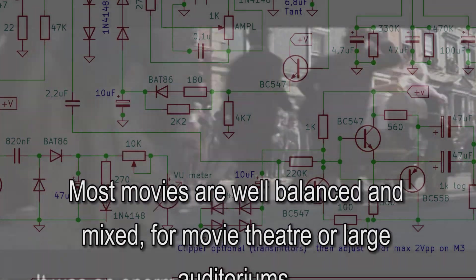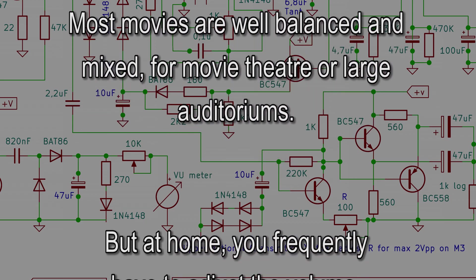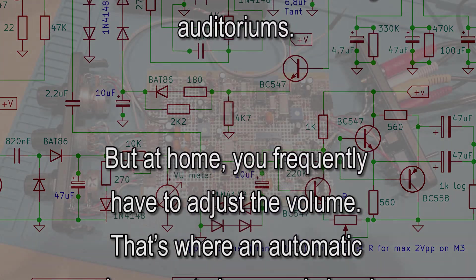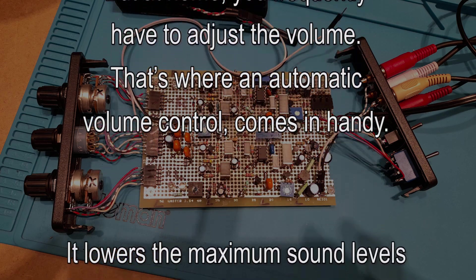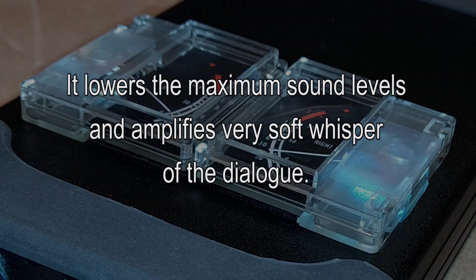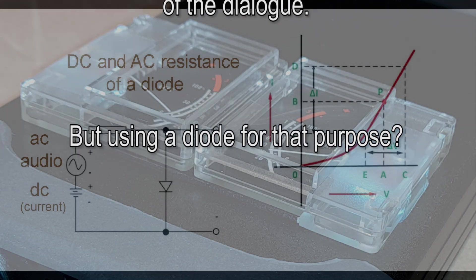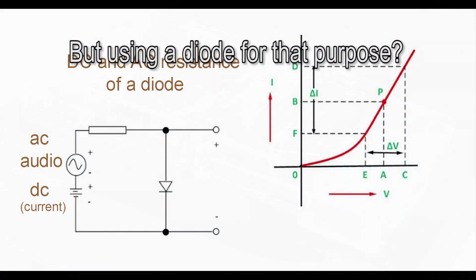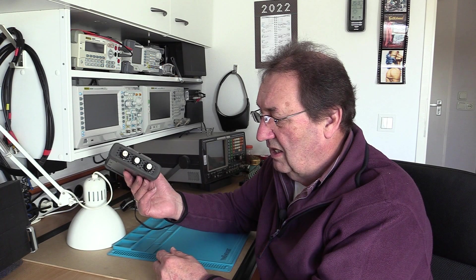Most movies are well balanced and mixed for movie theaters or large auditoriums, but at home you frequently have to adjust the volume. That's where an automatic volume control comes in handy. It lowers the maximum sound levels and amplifies very soft whispers of the dialogue.